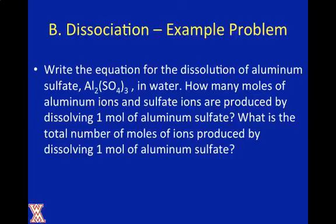The problem says: write the equation for dissolution of aluminum sulfate in water. How many moles of aluminum ions and sulfate ions are produced by dissolving one mole of aluminum sulfate? What is the total number of moles of ions produced by dissolving one mole of aluminum sulfate?